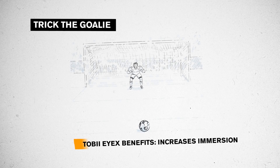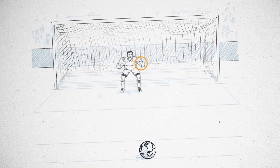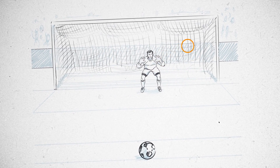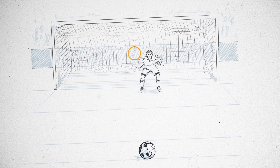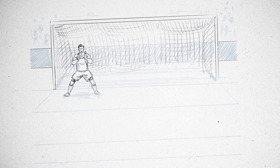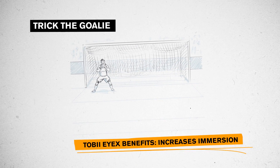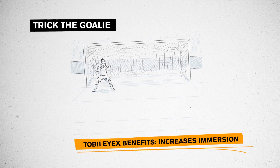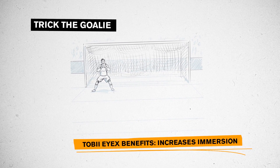Trick the Goalie: In real life, the goalkeeper reads the shooter's eye gaze to understand where he plans to place the shot. In games, this feature will increase the difficulty level and make soccer games more intense.